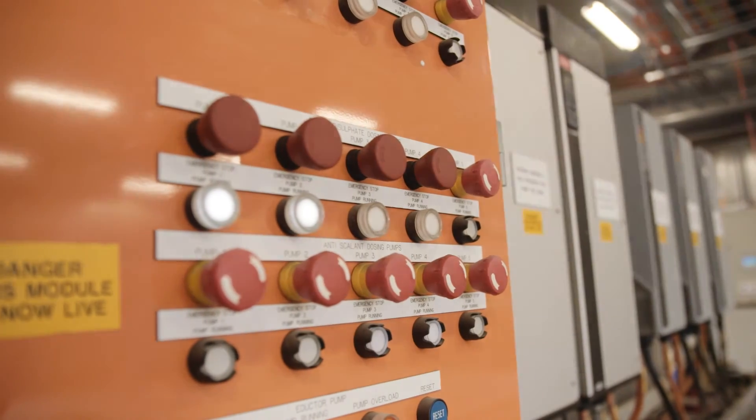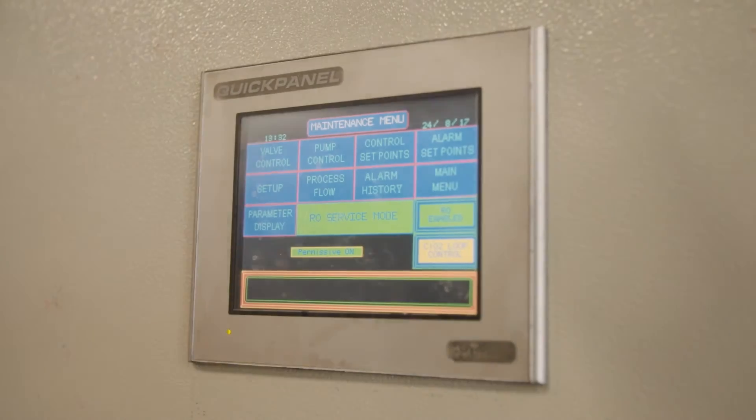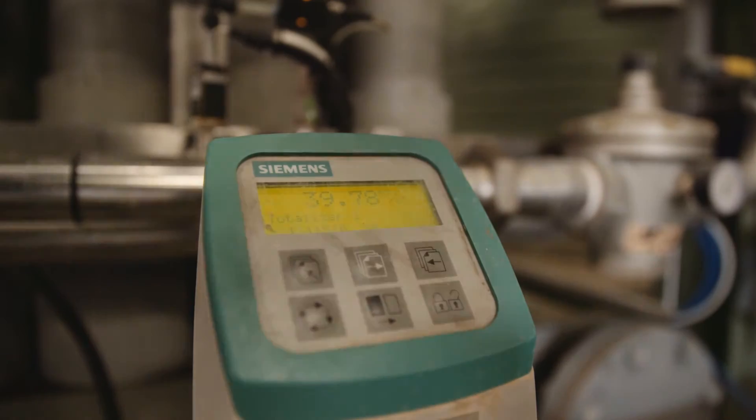Microfiltration was chosen as the pre-treatment because it filters out the suspended solids which feed the RO.